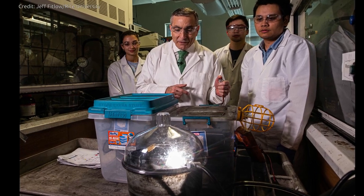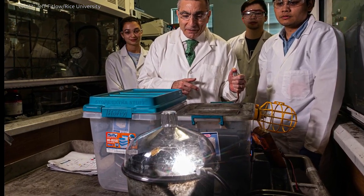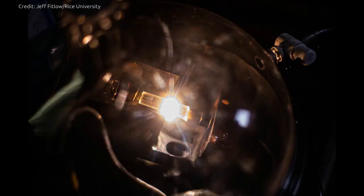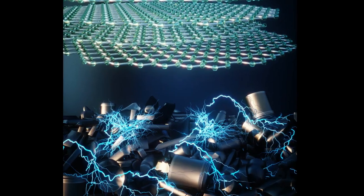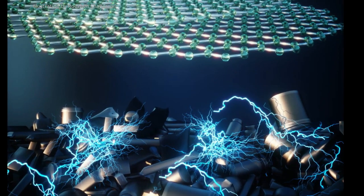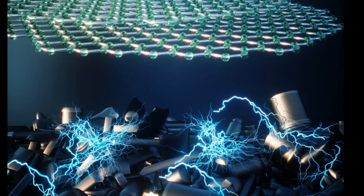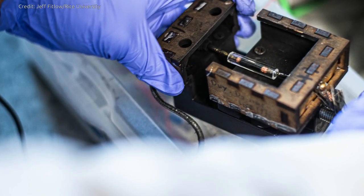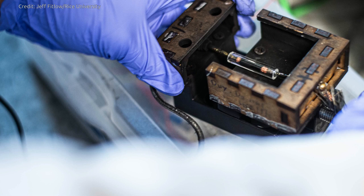The flash process happens in a custom-designed reactor that heats material quickly and emits all non-carbon elements as gas. When this process is industrialized, elements like oxygen and nitrogen that exit the flash reactor can all be trapped as small molecules because they have value.